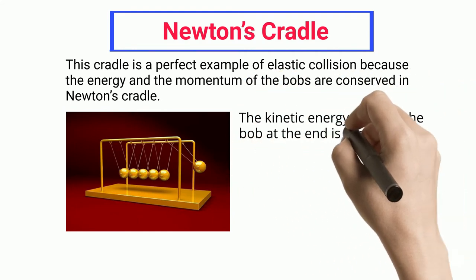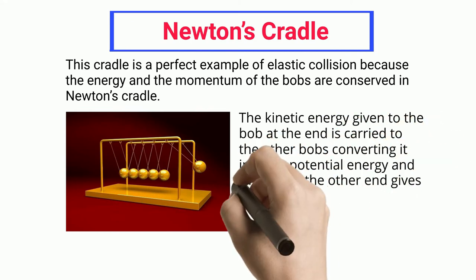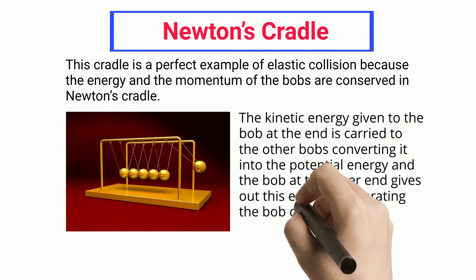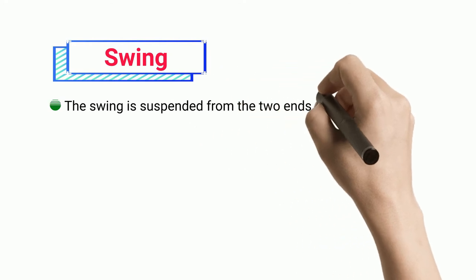The kinetic energy given to the bob at the end is carried to the other bobs, converting it into potential energy, and the bob at the other end gives out this energy, accelerating the bob and conserving the momentum.